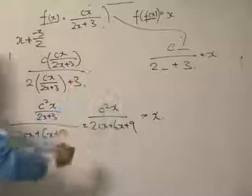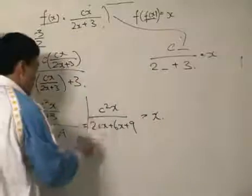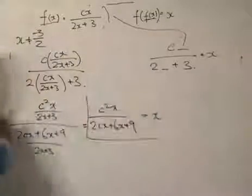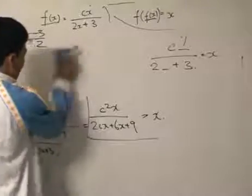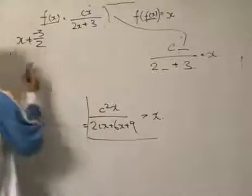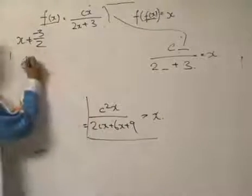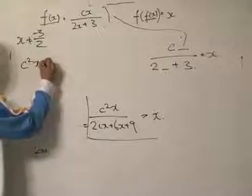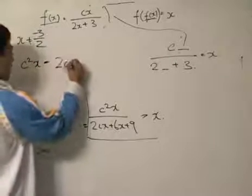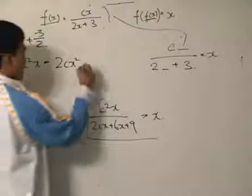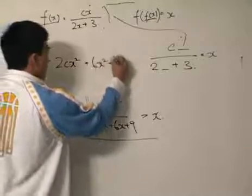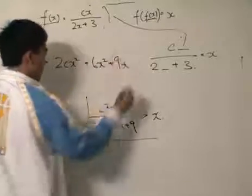What we want to solve is find c so that this equation holds. Rearranging by bringing everything to one side: c²x = 2cx² + 6x² + 9x.